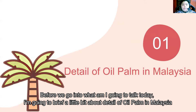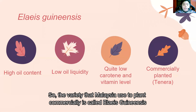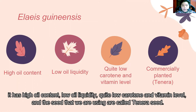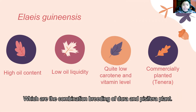Before we begin, I'll give a brief overview of oil palm production in Malaysia. The variety used commercially is called Elaeis guineensis. This variety is chosen because it has high oil content, low oil liquidity, and quite low carotene and vitamin levels. The seeds used are called tenera seeds, which are a combination of the dura and pisifera breeding.